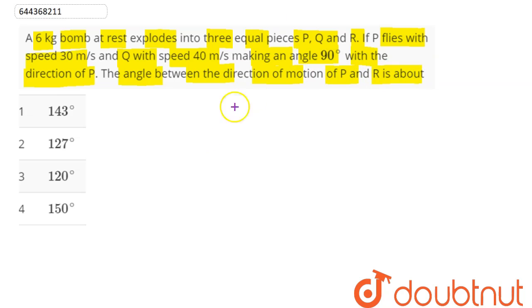We can say here initially the 6 kg bomb, this is our 6 kg bomb, now exploding into 3 pieces P, Q, and R. Now here we can say P flies with speed 30 m/s and Q with speed 40 m/s, 90 degrees with the direction of P.